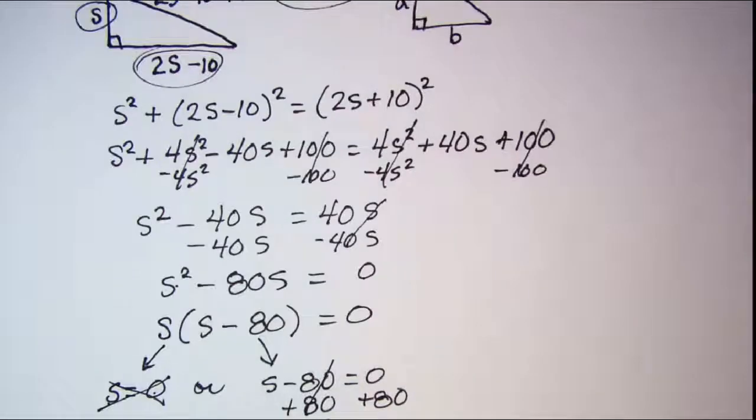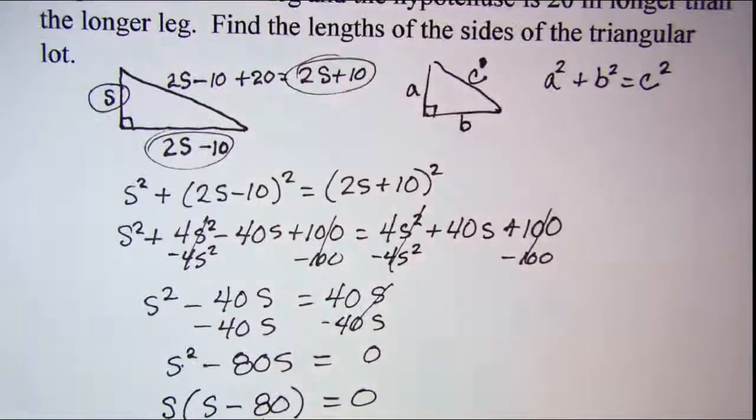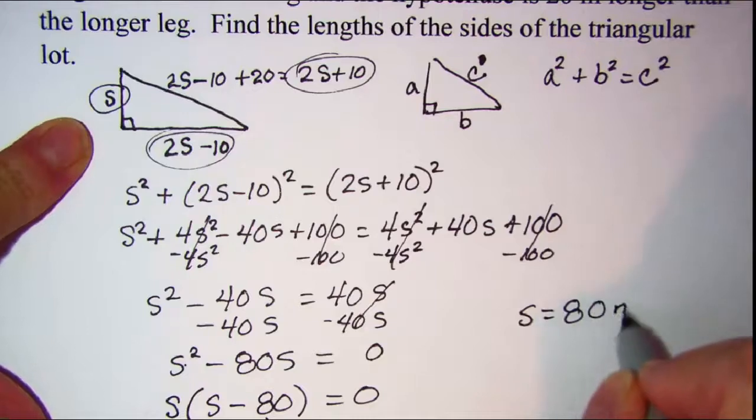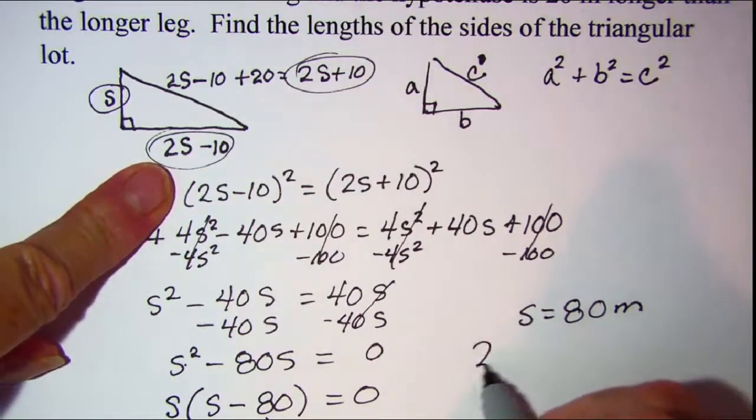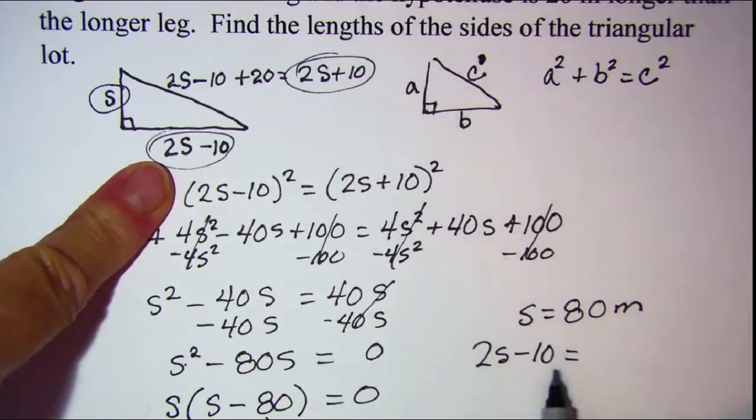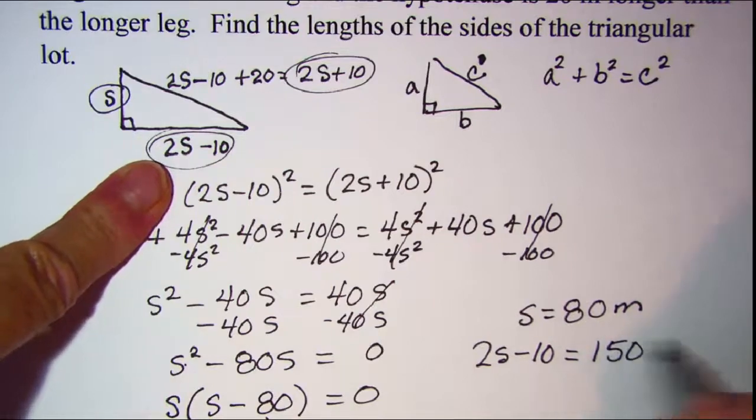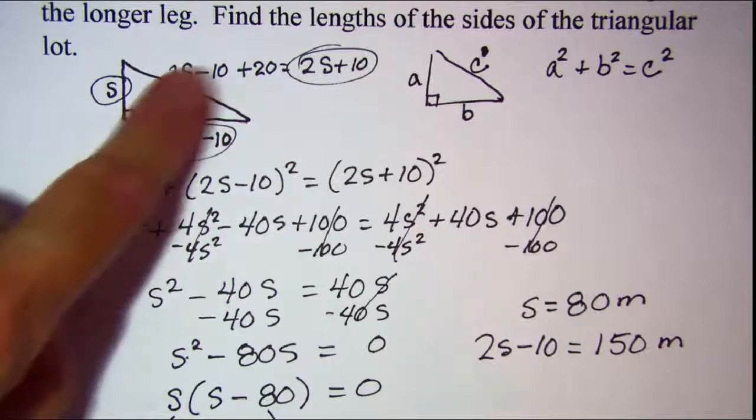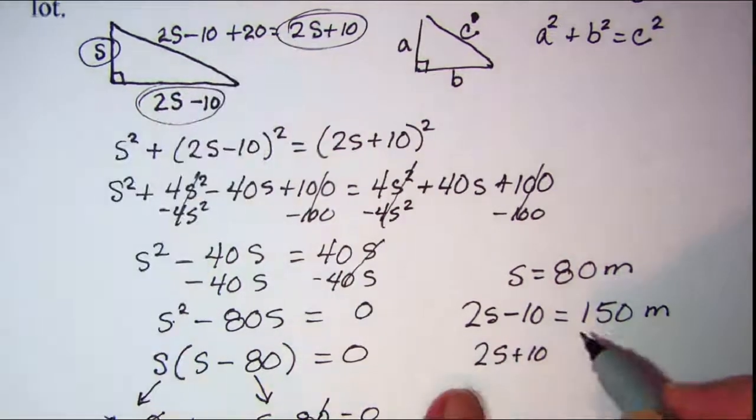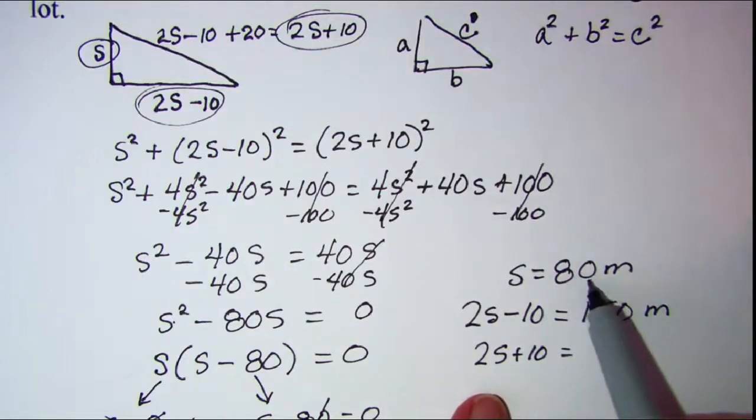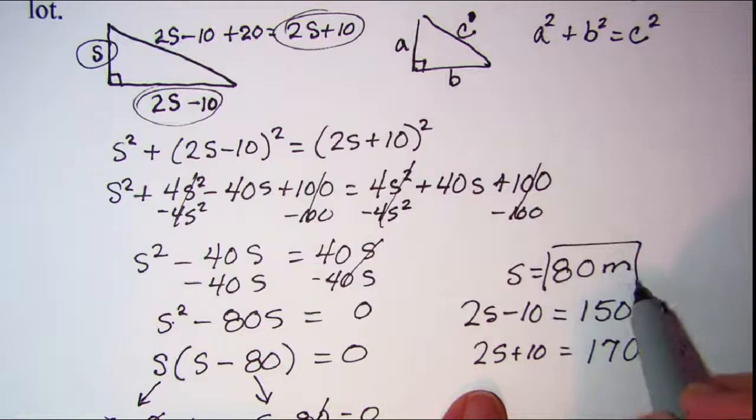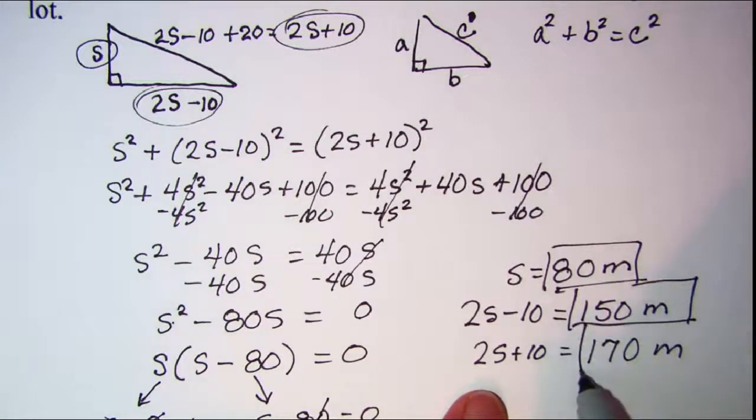So I now have 80 as one of the sides, so I'm going to come back up here. S is 80 meters, and then my other leg is 2s minus 10, so 2 times 80 is 160 minus 10 is going to be 150 meters, and then my hypotenuse is 2s plus 10, so 2 times 80 is 160 plus 10 is going to be 170 meters. These are the three lengths of the sides of my triangular lot.